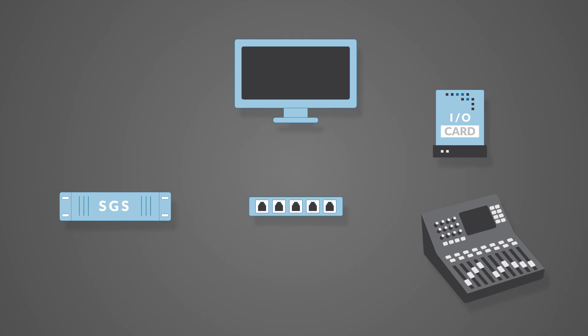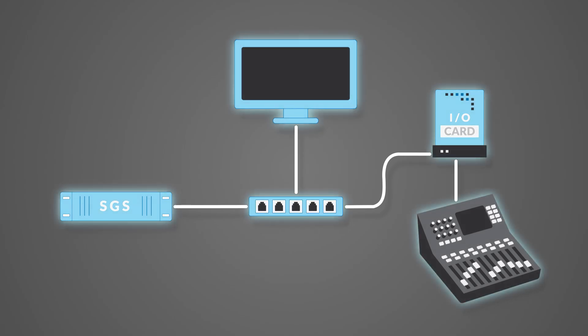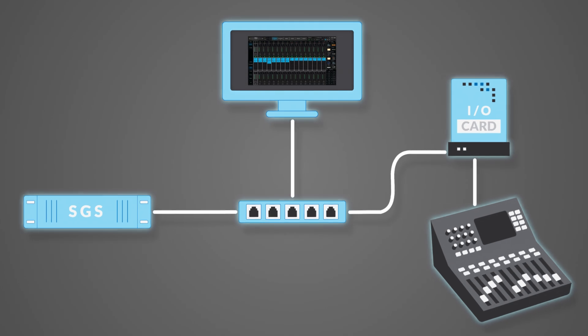One: connect the console expansion card and all other I/O devices to the Gigabit Ethernet switch. The order of the connectors on the switch is insignificant, but be sure to use Category 5e cables or better — do not use Category 5 cable, and if possible, do not daisy-chain devices. Two: connect the host computer and servers to the switch. Three: power up all devices. Four: launch SuperRack.